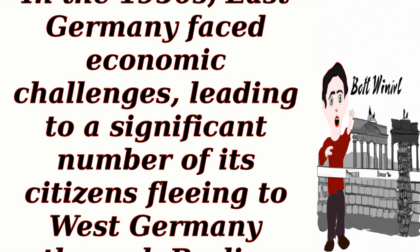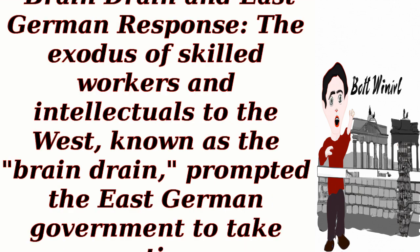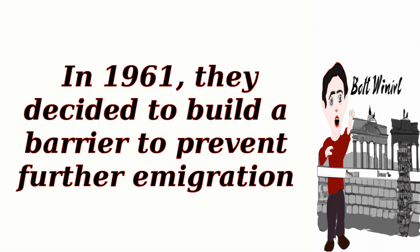East Germany's economic struggles: In the 1950s, East Germany faced economic challenges, leading to a significant number of its citizens fleeing to West Germany through Berlin, which remained an open border. This exodus of skilled workers and intellectuals to the West, known as the Brain Drain, prompted the East German government to take action. In 1961, they decided to build a barrier to prevent further emigration.